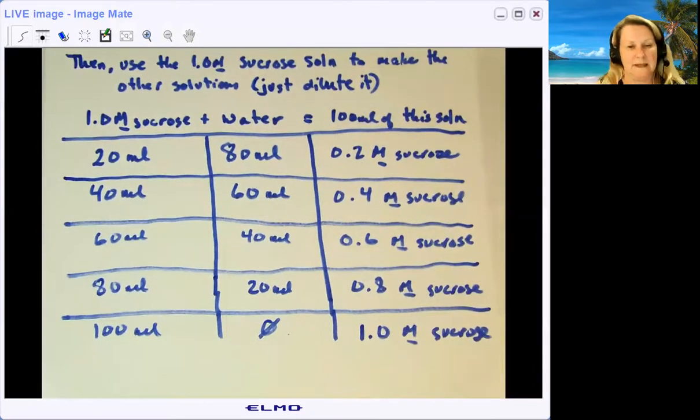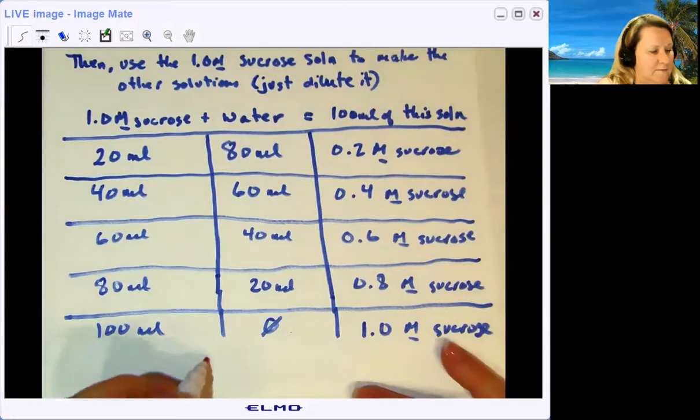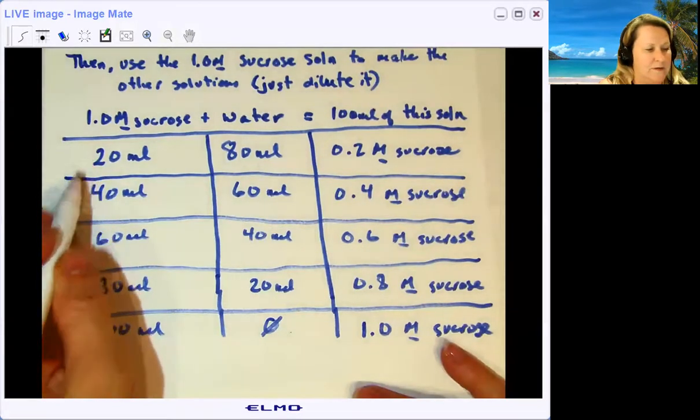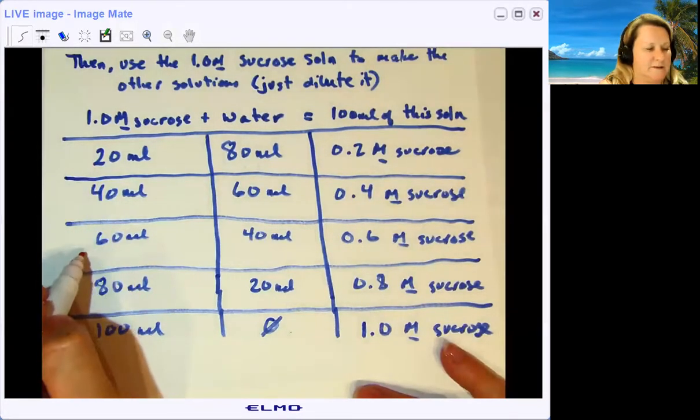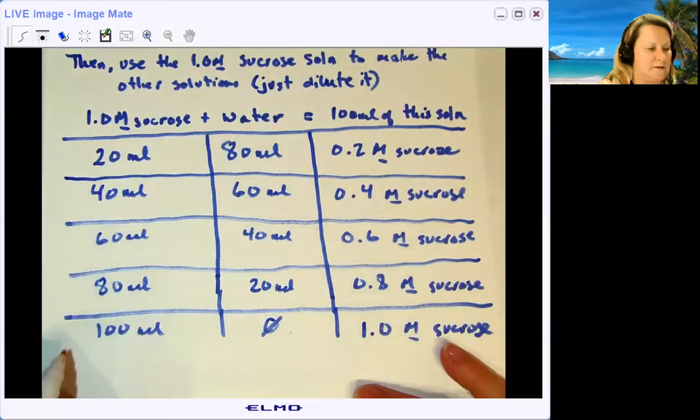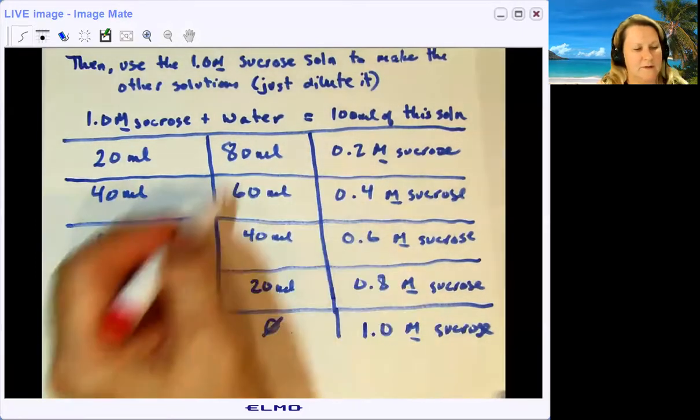If you add all these amounts up: 20 and 40 is 60, plus another 60 is 120, plus 80 is 200, plus 100 is 300. So to make 100 mils of each of these five solutions, I would need 300 mils of the one molar sucrose.